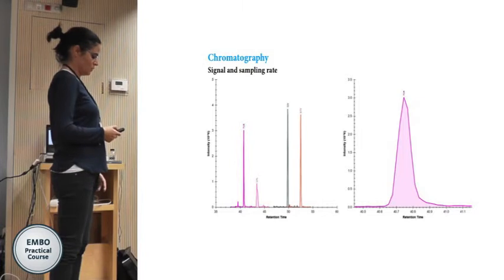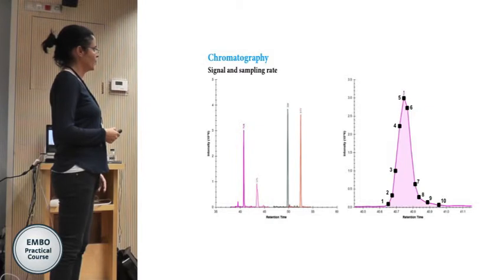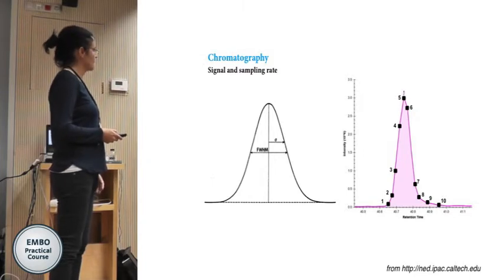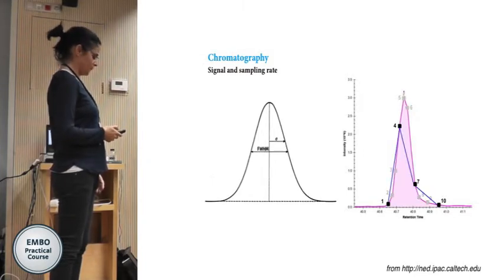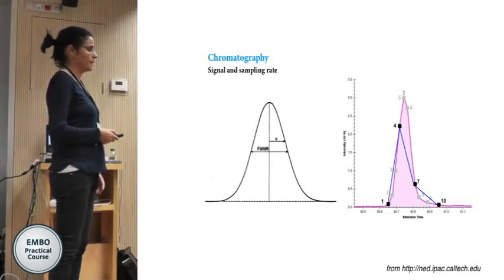The signal is not continuous — it is made by joining several data points. In this case we have 10 points in the peak, which is good enough, but this depends on the width of your chromatographic peak. With only four points the reconstruction is not good enough and the quantitation we will obtain will not be reliable.